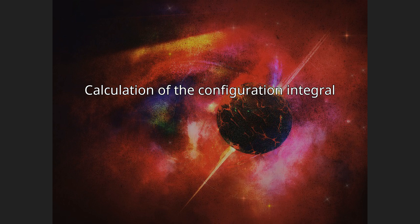One way to calculate the potential approximately is to use the Mayer cluster expansion. This expansion is based on the observation that the exponential in the equation for Q can be written as a product of the form: exp(-β Σᵢ<ⱼ U₂(Rᵢⱼ)) = ∏ᵢ<ⱼ exp(-β U₂(Rᵢⱼ)).